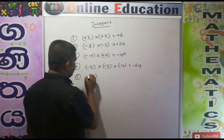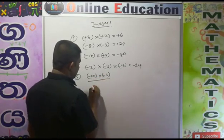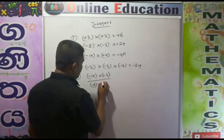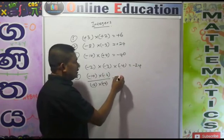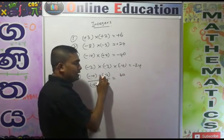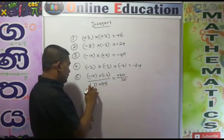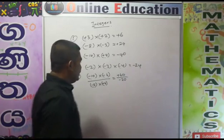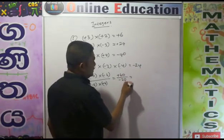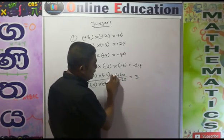Fifth example: minus 10 into minus 6, divided by minus 5 into plus 4. First multiply the numbers: 10 into 6 equals 60; minus into minus equals plus. Then 5 into 4 equals 20; minus into plus equals minus. Now 60 divided by 20 equals 3. Plus divided by minus — the signs are different — so the answer is minus 3.